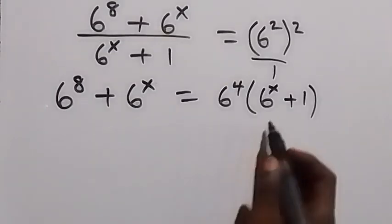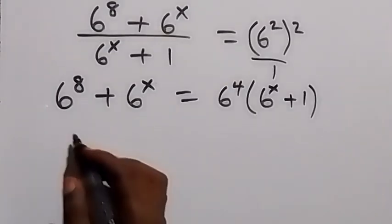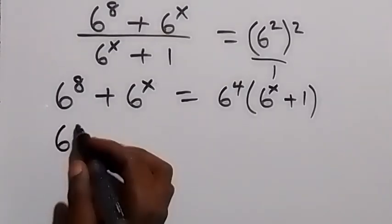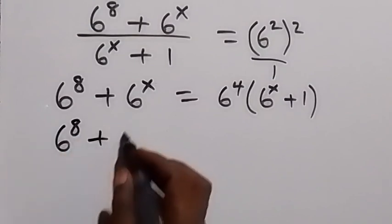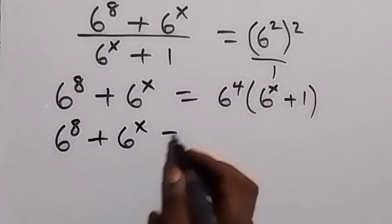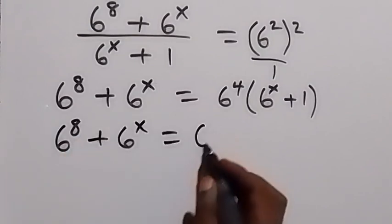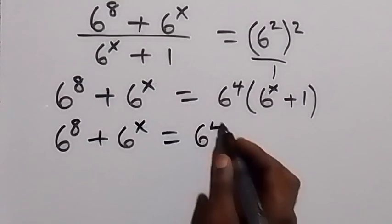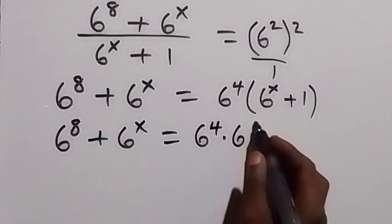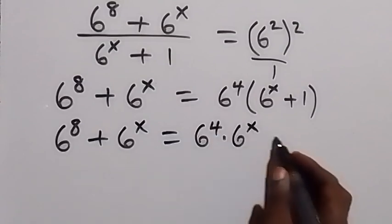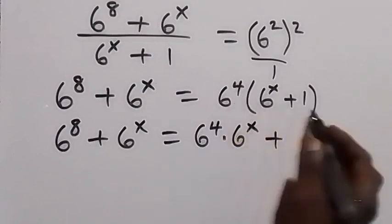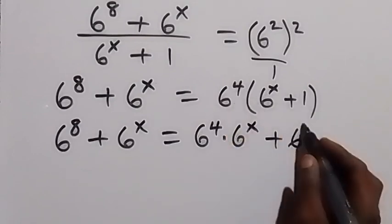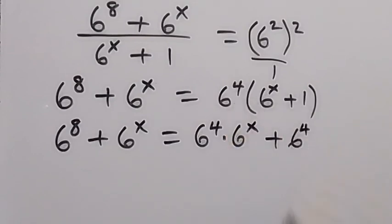In the next step we open this bracket and we have 6 raised to power 8 plus 6 raised to power x equals 6 raised to power 4 times 6 raised to power 4.